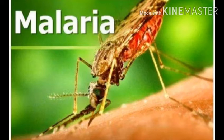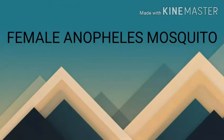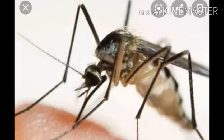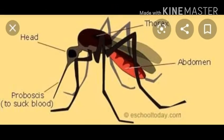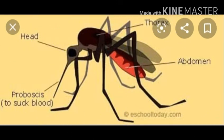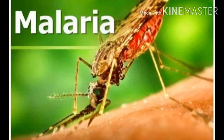Malaria is a disease that is caused by mosquito bite. Disease means unhealthy state when you are not healthy. Now let's see the cause of malaria. Cause means reason. Malaria is caused by the female Anopheles mosquito. A mosquito mainly has three body parts: head, thorax and abdomen. Proboscis is used by the mosquito to suck blood. You can see the body parts of the mosquito on your screen. The female Anopheles mosquito carries germs of malaria. When she bites a human, she injects these germs into the human body.